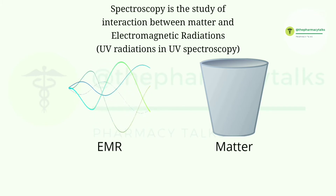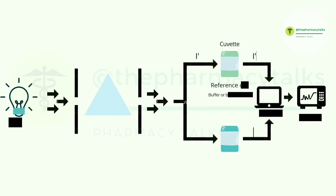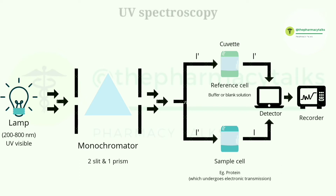In UV spectroscopy, the light used is of wavelength ranging from 200 to 800 nanometers, that is the wavelength of the UV visible region. It is allowed to pass from a lamp source to the monochromator.